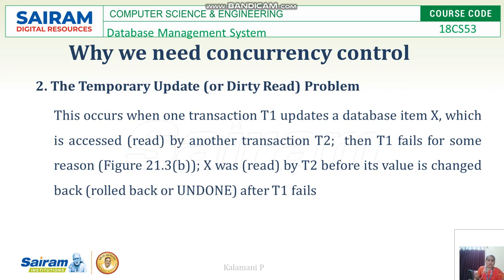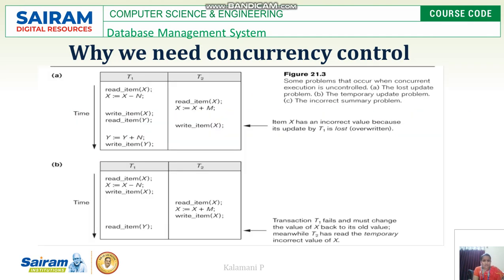The next problem is the temporary update problem, or dirty read. This occurs when one transaction T1 updates a database item X which is then accessed by another transaction T2. T1 then reads item X, writes item X, and T2 also reads and writes item X.